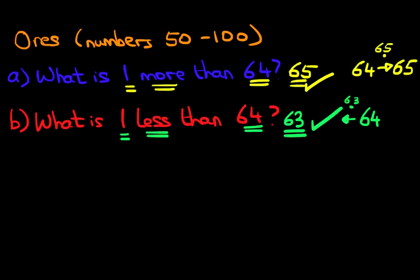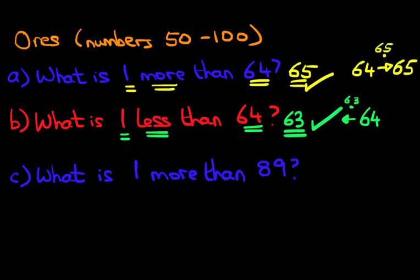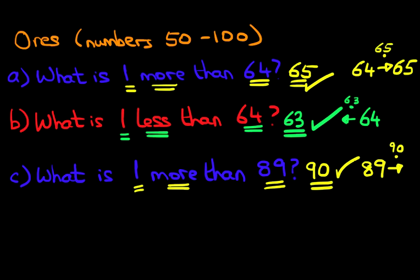So now let's look at a couple more questions. What is one more than 89? Using the same method — what number are we looking at? It is 89. Are we counting forwards or backwards? It's more than, so therefore we are counting forwards by 1. The number after 89 is 90. That is our answer, 90. And we get another tick.